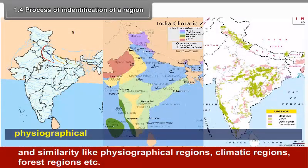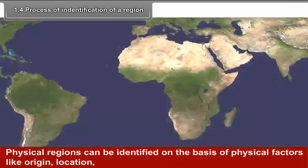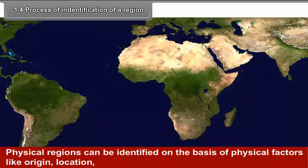Regions are identified on the basis of common characteristics, contiguity and similarity — like physiographical regions, climatic regions, forest regions, etc.